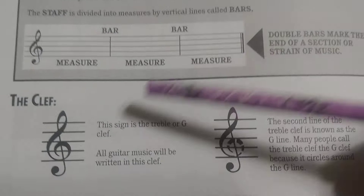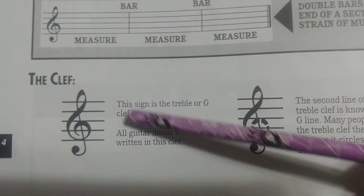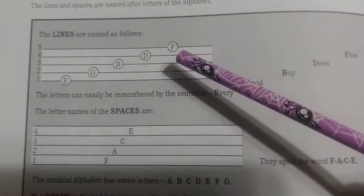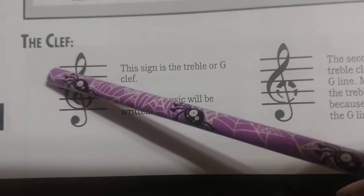Our clef is the next thing you're going to see on our staff. When we put the clef onto the staff, it's going to tell us what group of letters we use. In guitar, we actually only use the treble clef, so the only groupings of letters you have to worry about are FACE for the spaces and Every Good Band Deserves Funding for the lines. The treble clef is also sometimes called the G clef, because it goes through the G line where this little swoopy part is.